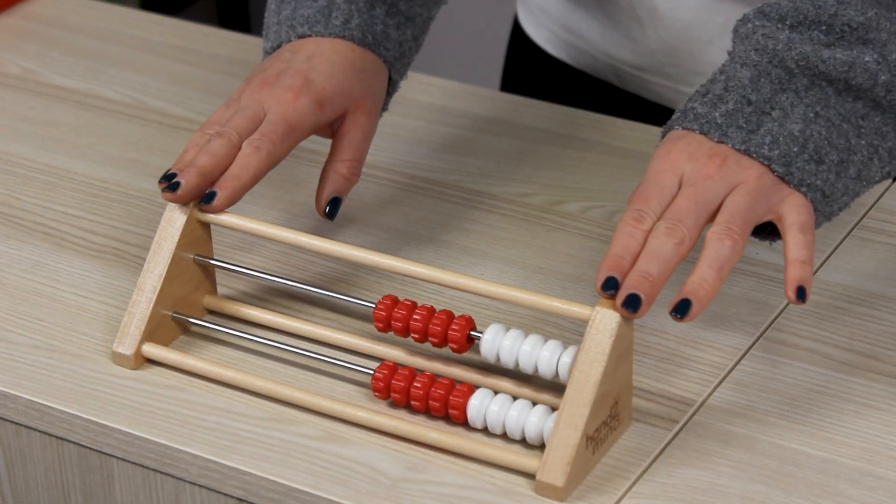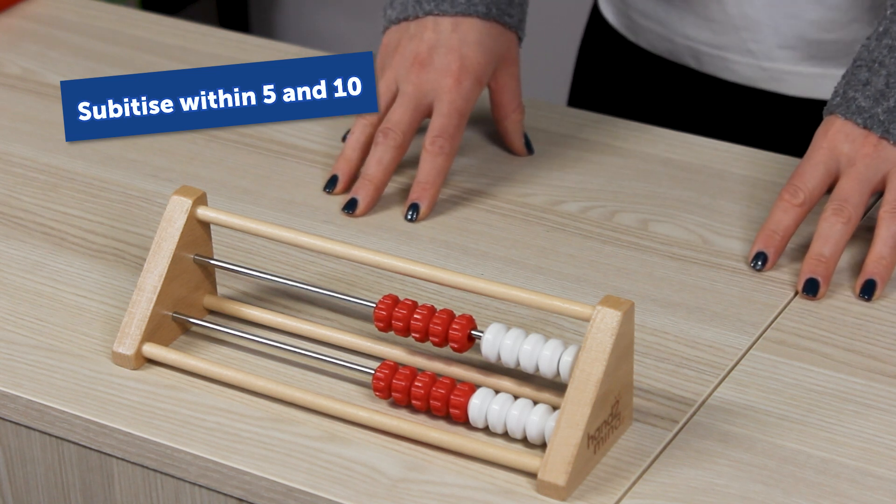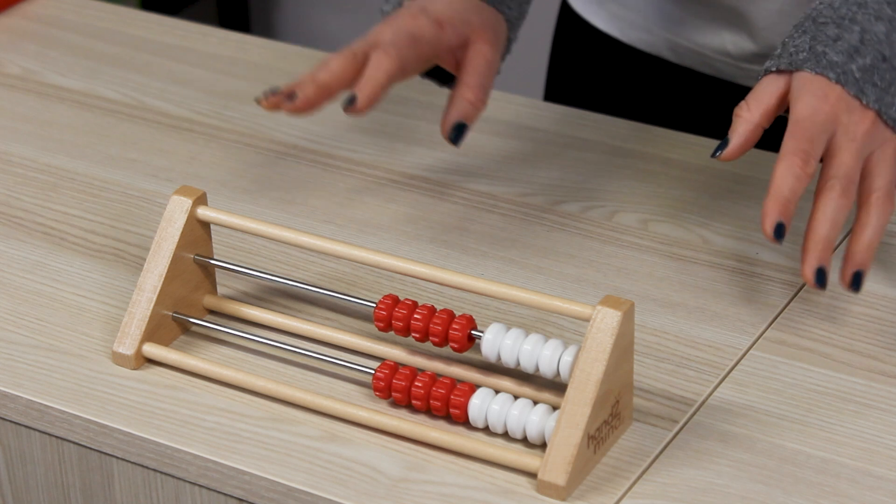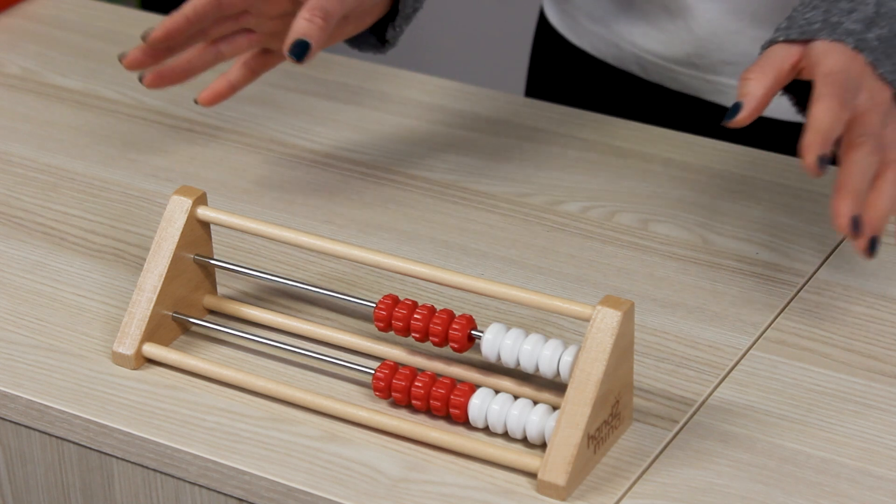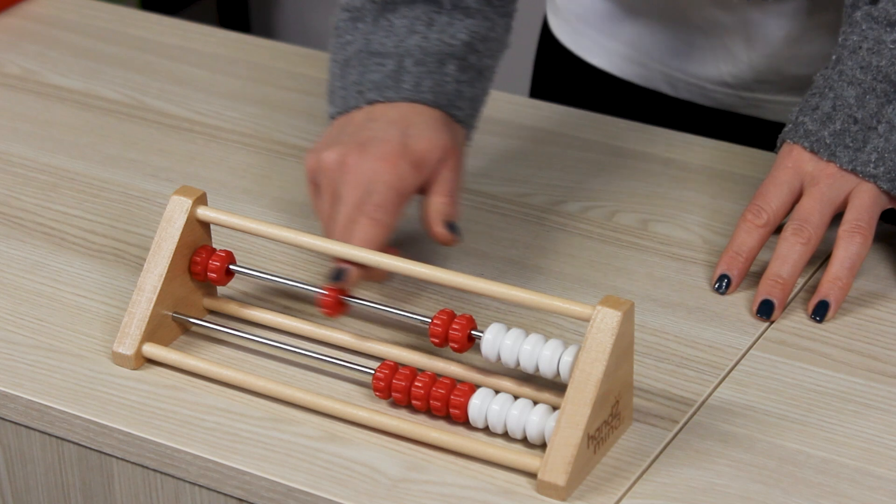Then we're going to move into an activity of building numbers and beginning to subitize within five and ten. So we're just going to get children to explore things like can you show me three? So they need to move across their one, two, three.